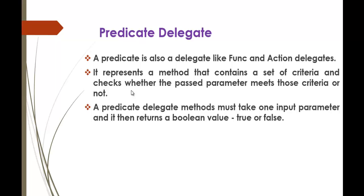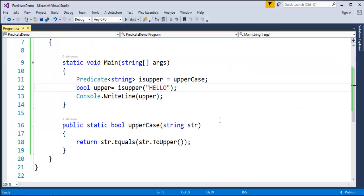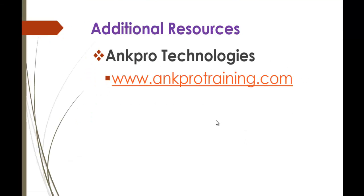The greatest advantage of using a predicate delegate is that we can make our code short, simple, and easy to understand. As you can observe, this code is very clean. Action, Func, and Predicate — learned over the last sessions — are very simple and easy to use, and that's the major advantage of these delegates. Thank you for listening, have a great day. Please subscribe to AngPro Training and don't forget to give feedback. Thank you.